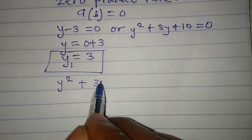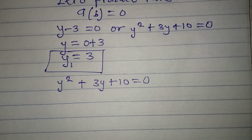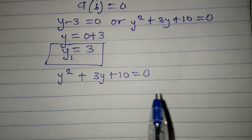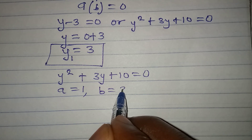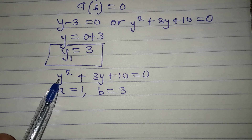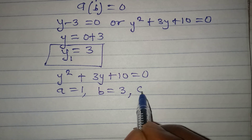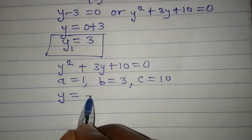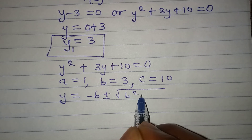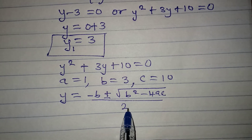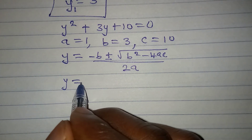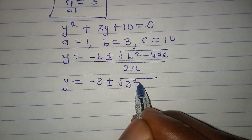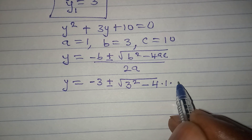To get y₂ and y₃ we pick from the quadratic equation: y squared plus 3y plus 10 equals zero. Using the quadratic formula, a is 1 (coefficient of y squared), b is 3 (coefficient of y), and c is 10 (the constant). The formula is y equals minus b plus or minus square root of b squared minus 4ac, all over 2a.